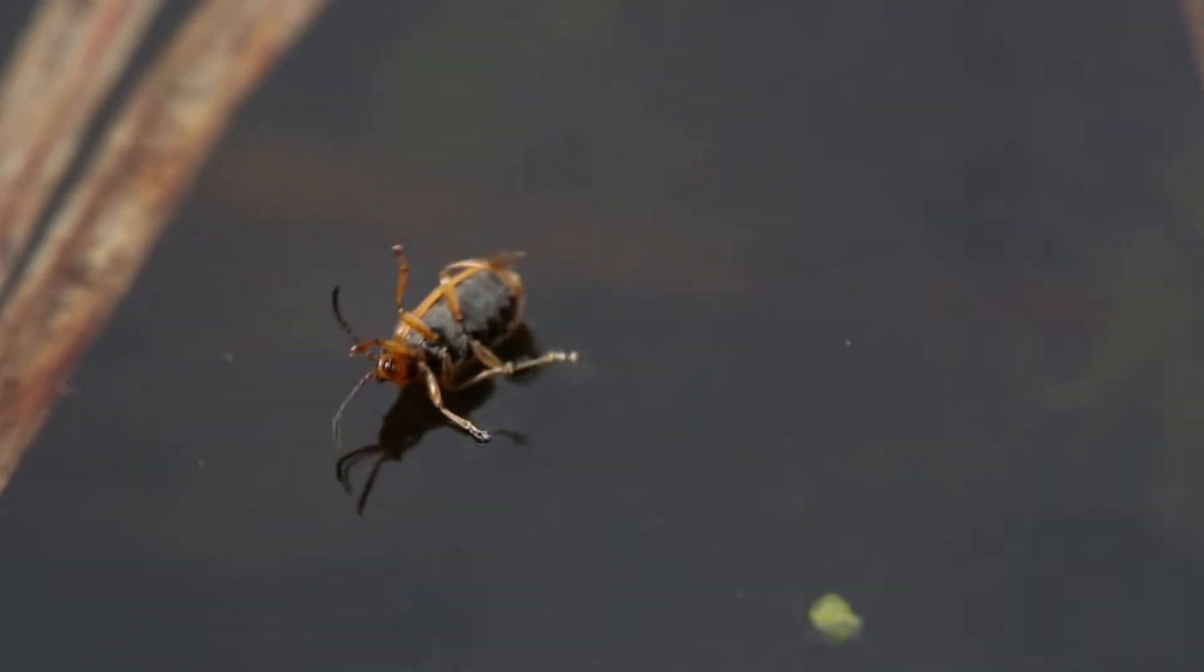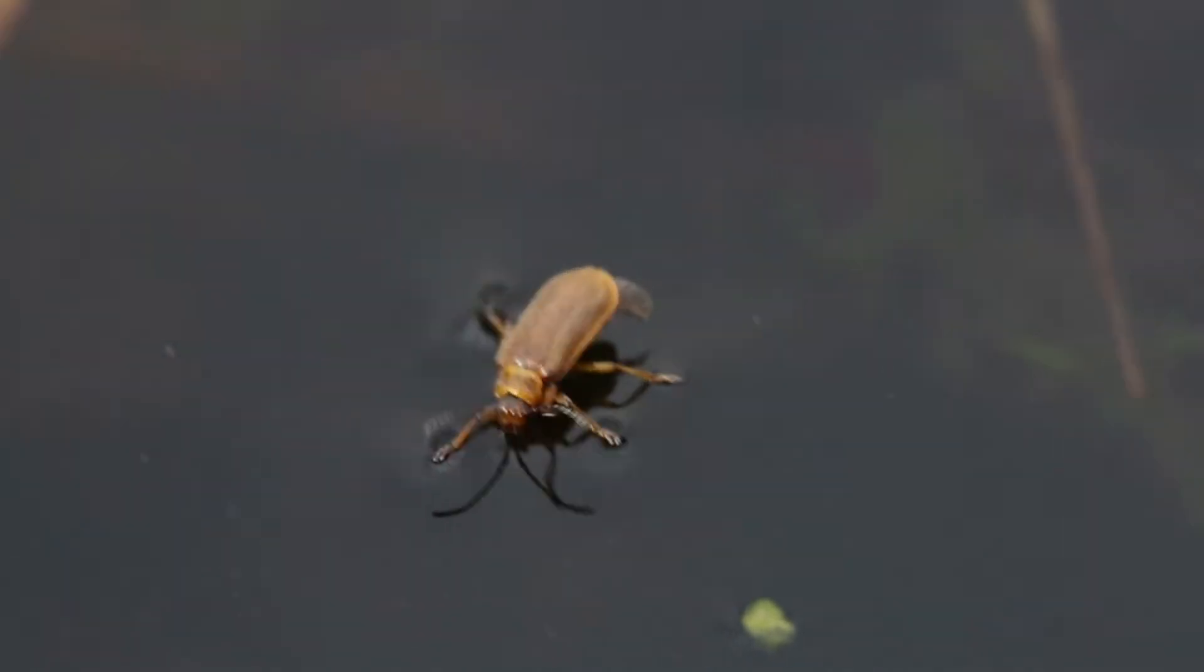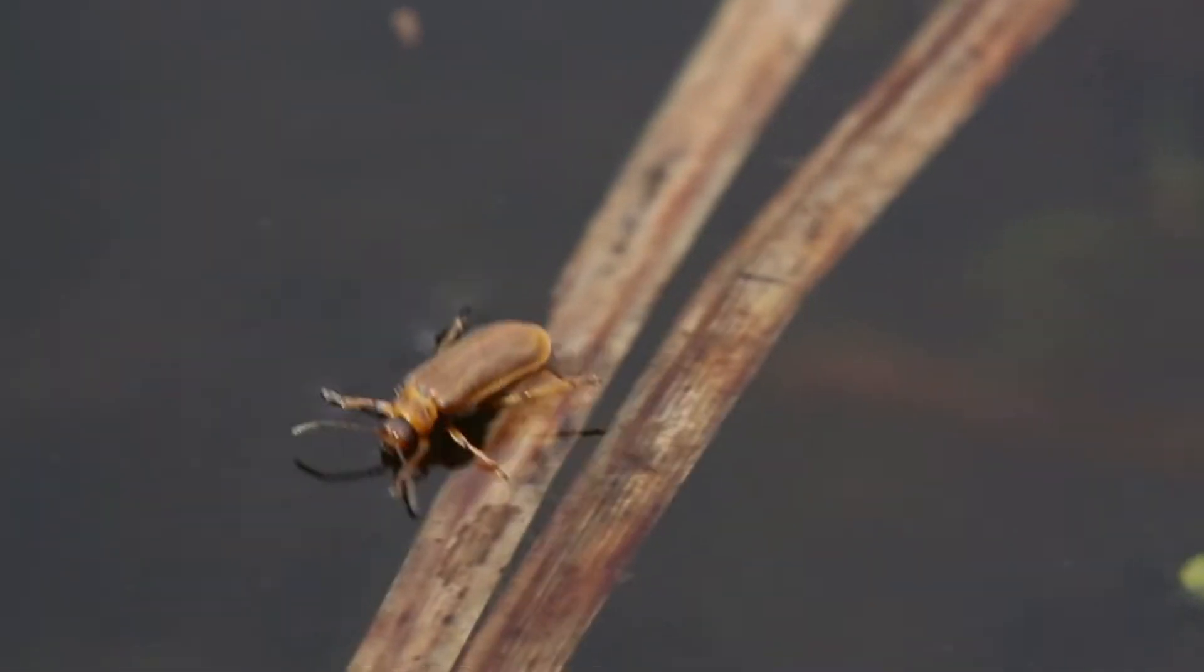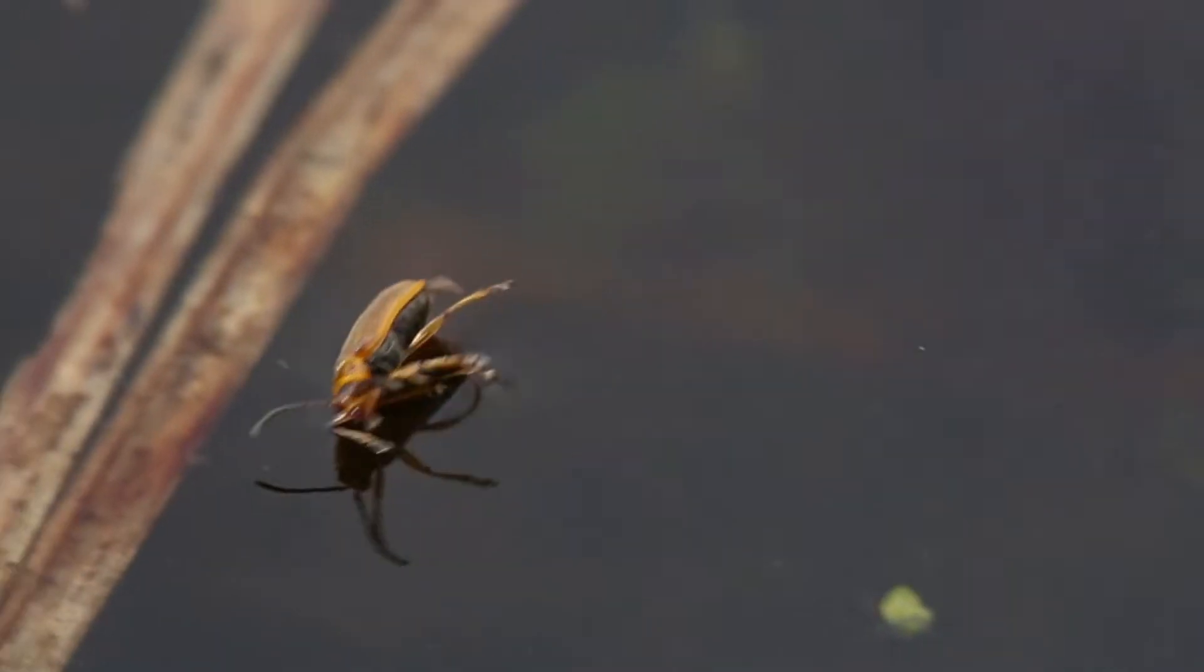In terms of designing a beetle fly pattern, there's a spectrum from a high floating one that barely dents the film but yet has active flailing legs. The spectrum continues down to swimming beetles that are underwater patterns.